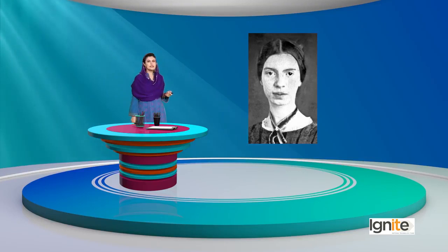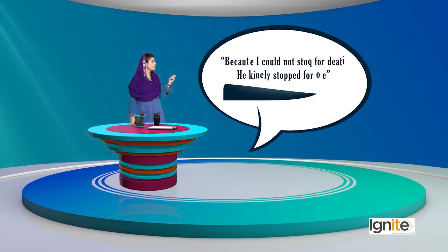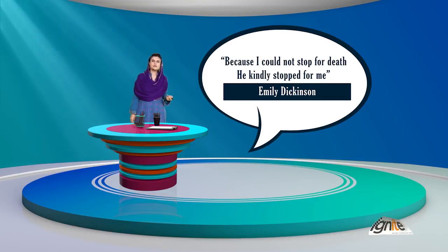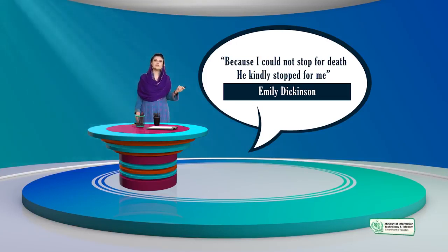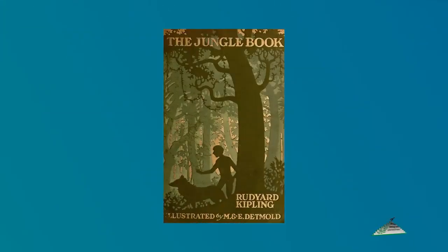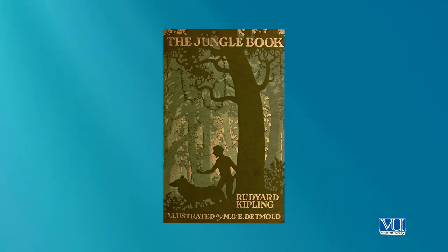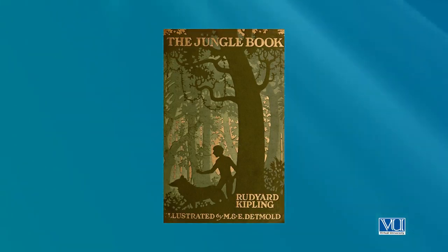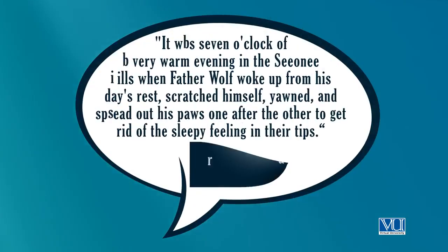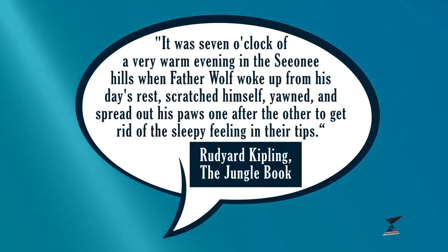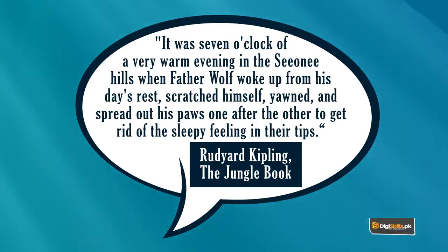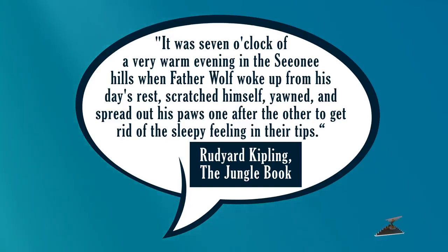Emily Dickinson, एक बहुत मशहूर poet हैं। उनकी poem 'Because I Could Not Stop for Death' की opening line है: 'Because I could not stop for Death, He kindly stopped for me.' Death के लिए वो नहीं रुक सकती थीं तो Death उनके लिए रुक गई — यह एक striking personification है। Rudyard Kipling's The Jungle Book की opening line है: 'It was seven o'clock of a very warm evening in the Seoni Hills when Father Wolf woke up from his day's rest, scratched himself, yawned, and spread out his paws one after the other to get rid of the sleepy feeling in their tips.'